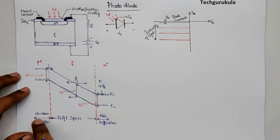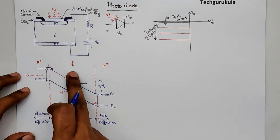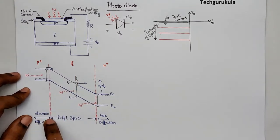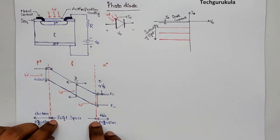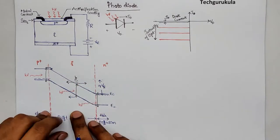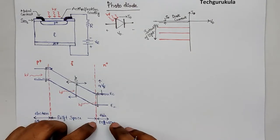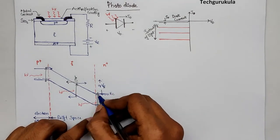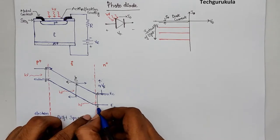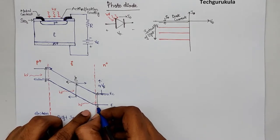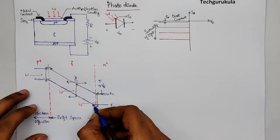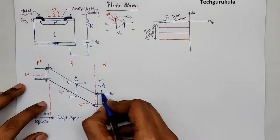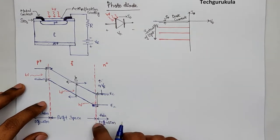Electrons on the P side diffuse into the intrinsic region — this is the electron diffusion region — whereas carriers in the intrinsic region move by drift due to the electric field present. On the N side, when electron-hole pairs are generated due to incident light, holes diffuse into the intrinsic region where the electric field sends them to the P side. Electrons on the N side are pushed away. This is the hole diffusion region.